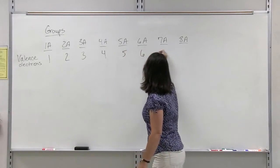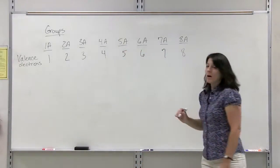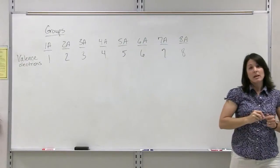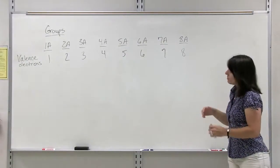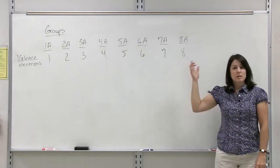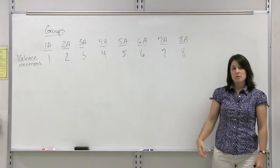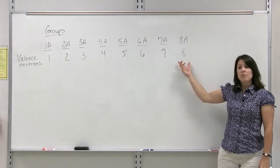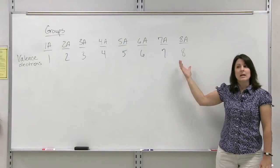All the way to 8A, and they have eight valence electrons. Eight valence electrons is the maximum number of electrons that you can have. That is basically a full set, which we call an octet.